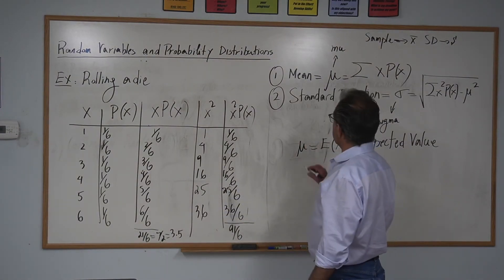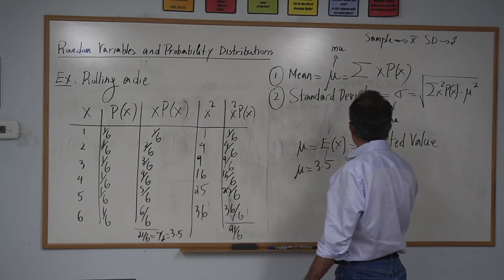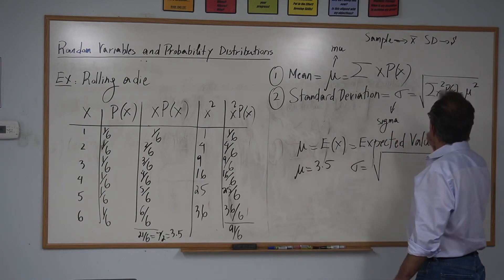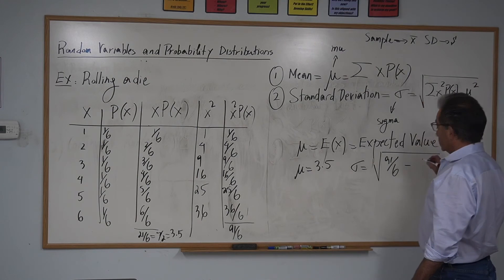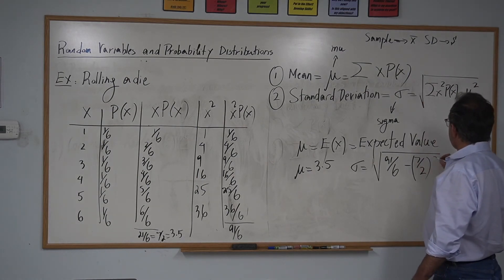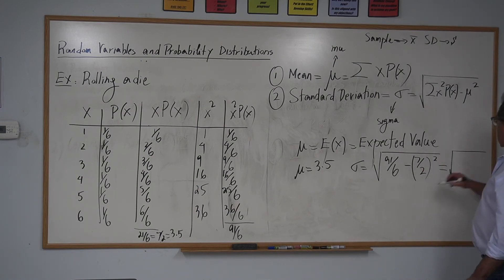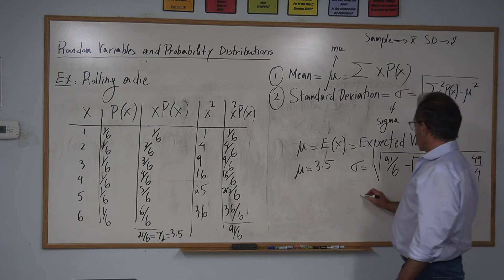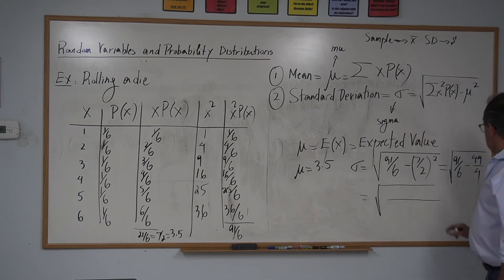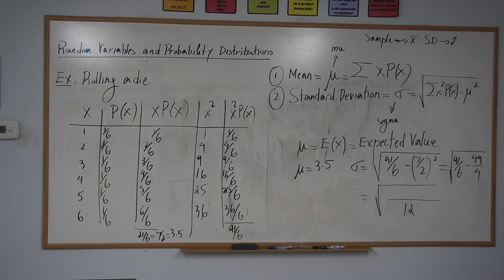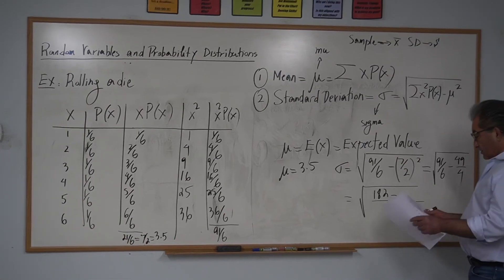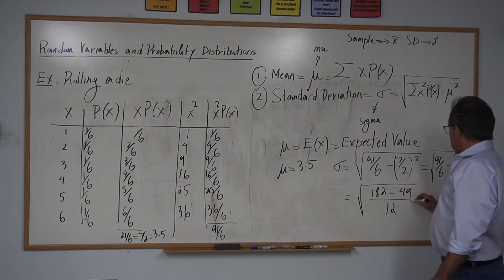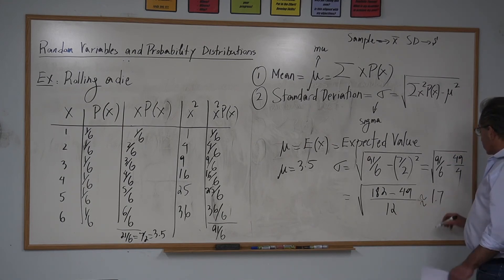So the mean is 3.5 and the standard deviation is the square root of [X² times P(X)] minus the mean squared. That's the square root of 91/6 minus (7/2)², which is 91/6 minus 49/4. The LCD of 6 and 4 is 12, giving 182/12 minus 147/12. If you do that, you get approximately 1.7.